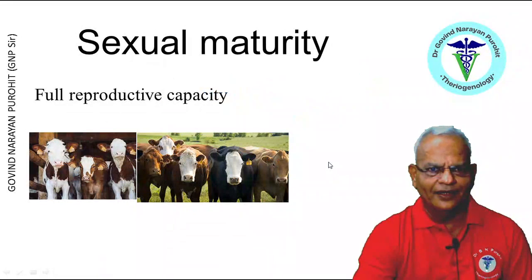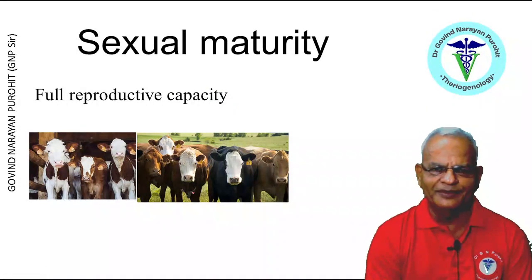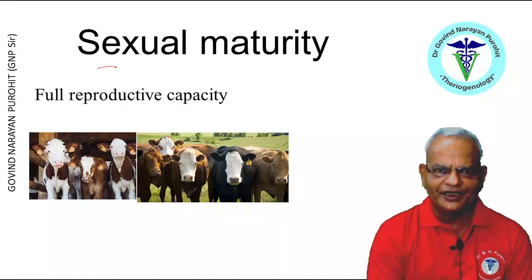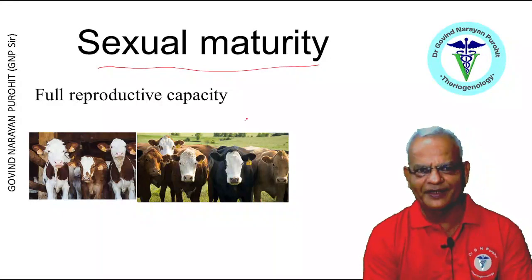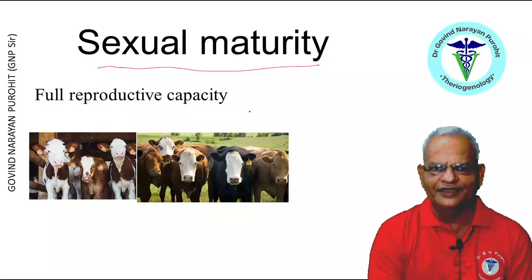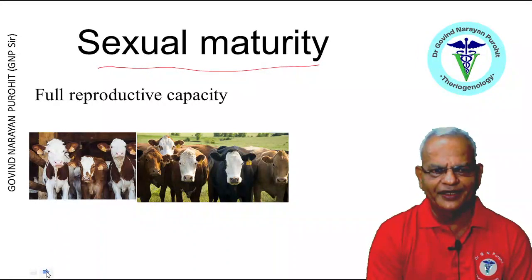Now, we want to talk about another term which comes with puberty, and that is sexual maturity. Sexual maturity is not the same as puberty, because sexual maturity is attaining the full reproductive capacity, which is attained sometime later after puberty — maybe a few weeks or a few months after puberty — when the female or the male attains sexual maturity.